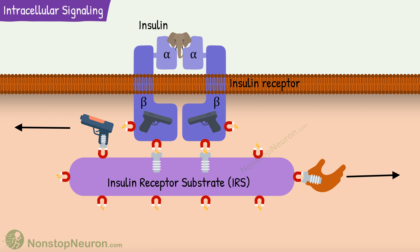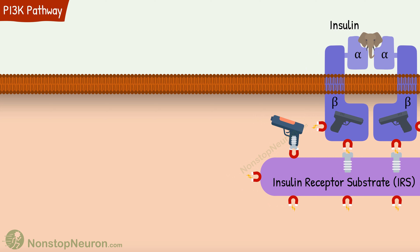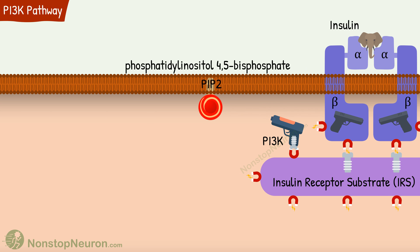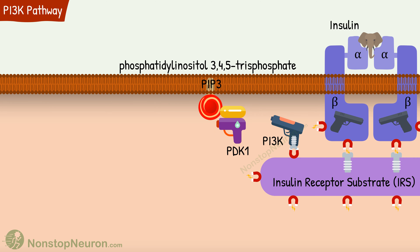Now, these IRS proteins are docking proteins to which various downstream signaling proteins bind and then become activated. IRS1 has multiple such binding sites so that a single IRS molecule simultaneously activates multiple pathways. There are two major signaling pathways triggered by this machinery: one is the PI3K pathway and the other is the MAPK pathway. Let's first talk about phosphatidylinositol-3 kinase, or PI3K pathway. In this, PI3K binds to phosphorylated IRS, which causes its activation allosterically. PI3K then phosphorylates a membrane lipid, phosphatidylinositol-4,5-bisphosphate or PIP2, to form phosphatidylinositol-3,4,5-trisphosphate or PIP3. PIP3 then recruits and activates phosphoinositide-dependent kinase, or PDK.